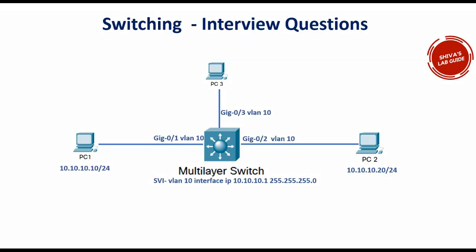In this video I'm going to discuss one of the frequently asked interview questions related to switching. This is a scenario-based question. I have one multi-layer switch — a Layer 3 switch — and it has three interfaces: Gi0/1, Gi0/2, and Gi0/3. All of them are access ports with VLAN 10 configured. This multi-layer switch also has an SVI interface — a VLAN 10 interface — with IP address 10.10.10.1/24.